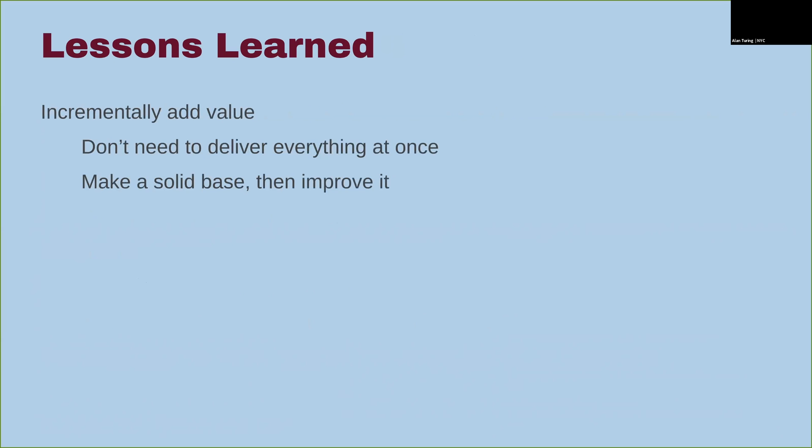Next: incrementally add value. We started off with a broken system, and over the last year and a half we've added more and more to it. We actually broke even and people found it useful around the time when we switched to Jaeger standalone, and we've only added value since then. You don't need to deliver everything at once — just get started, get something people find useful, and then improve on it.